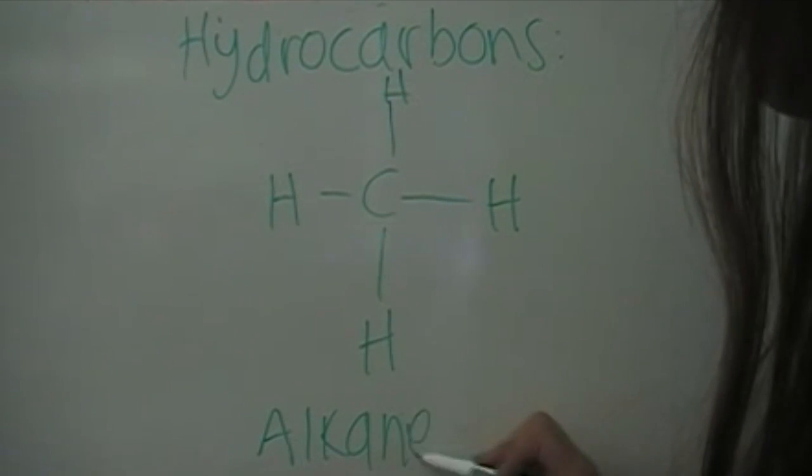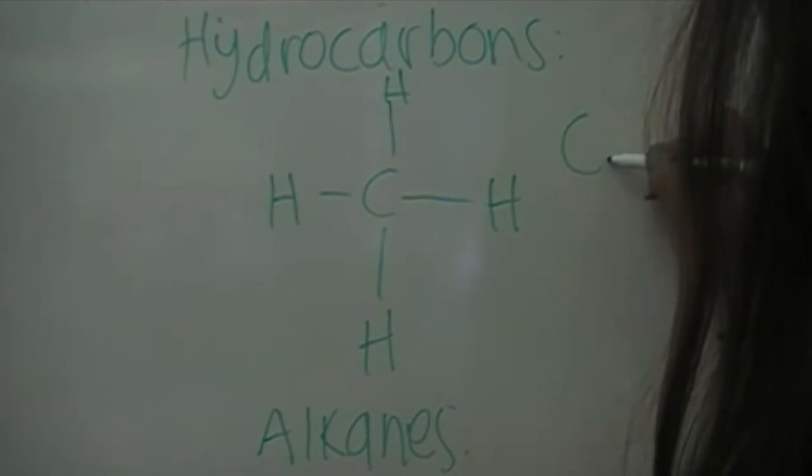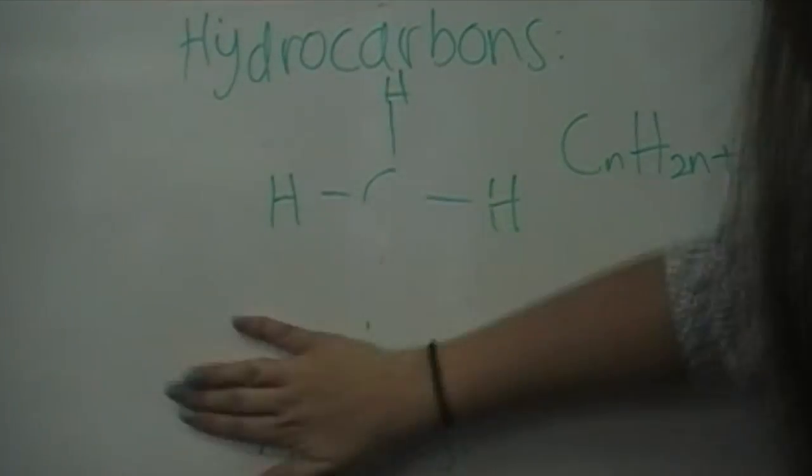Alkanes are structured so that all carbon-carbon bonds are single bonds. Alkanes have the general formula C subscript N, H subscript 2N plus 2.